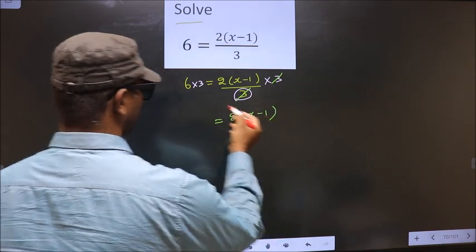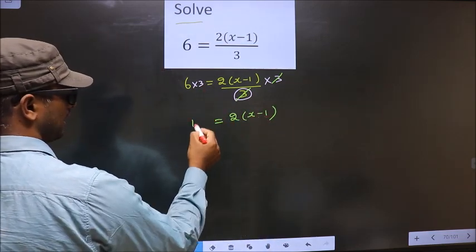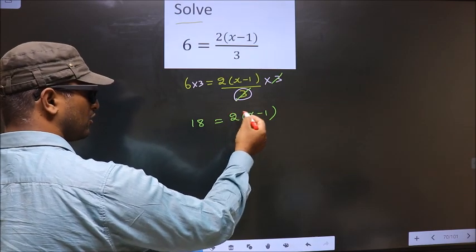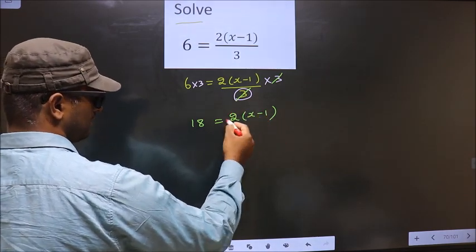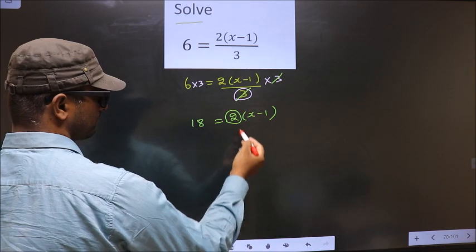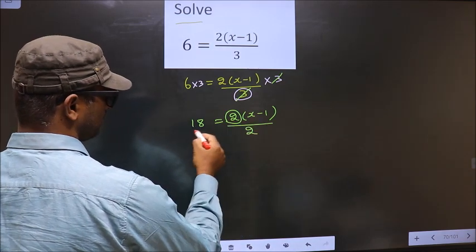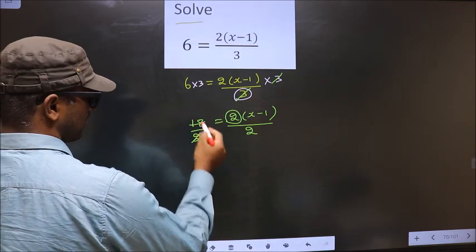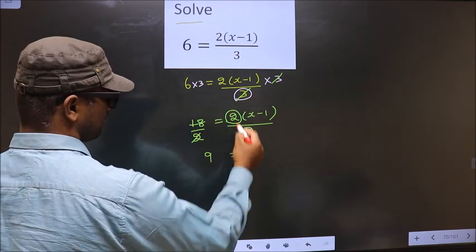Now instead of opening up the bracket, we remove this 2. To remove this 2, we should divide by 2 on both sides. So here 2 cancels, 2 into 9 equals, here it cancels out, x minus 1.